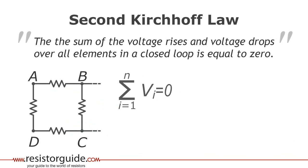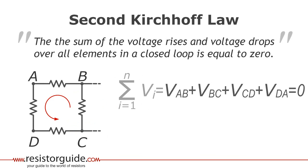Let's take a look at an example of a closed loop within a network. The sum of the voltage differences between the four nodes A, B, C and D is zero.